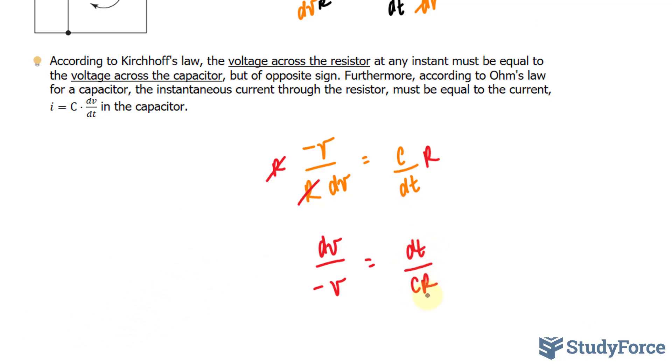I'll multiply both sides by negative as well. I don't want the negative at the front, just for preference. Multiplying both sides by negative one, this goes away. And the term on the right side gets the negative value.